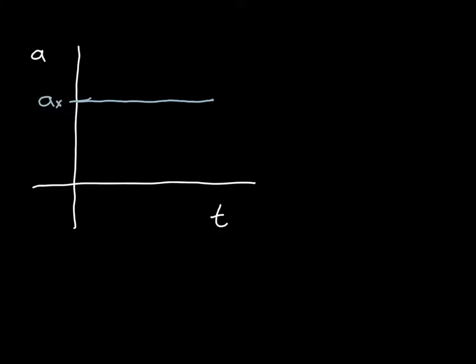First we'll consider a graph of acceleration versus time. At this level of physics, these graphs are going to be really boring — they're all going to be horizontal lines. We are limiting the situations we deal with for the sake of making our math a little easier. If we had something other than a horizontal line here, our other relationships later on would get much more complex. So just to keep the math manageable for high school students or first couple years of college students, we don't include those situations right now.